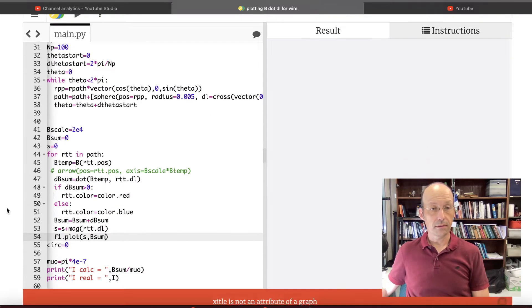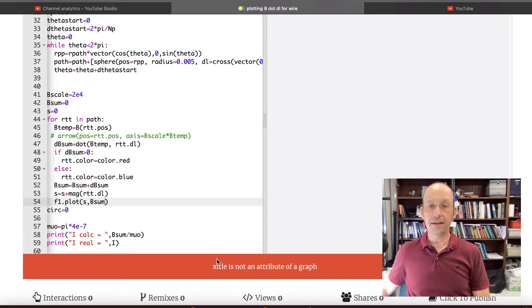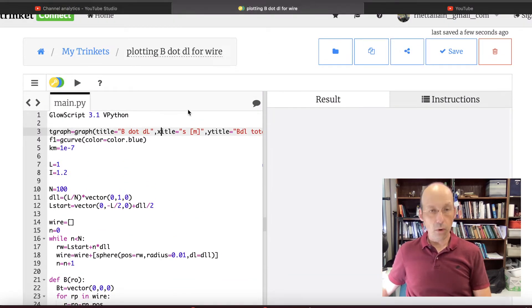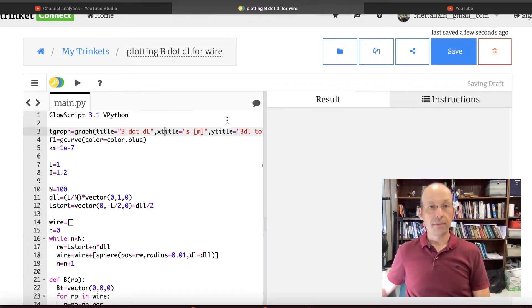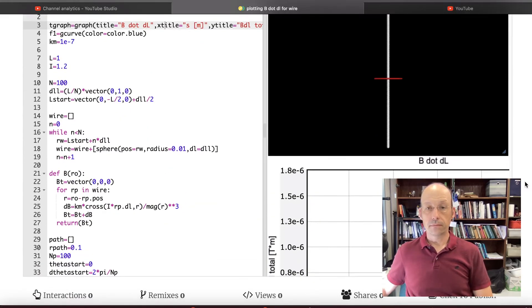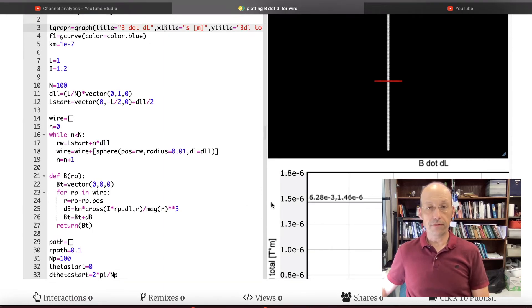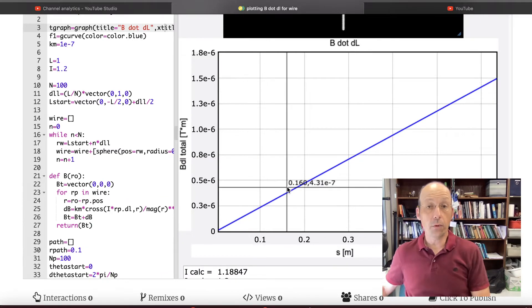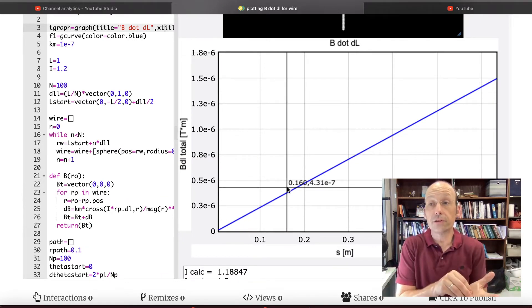If that works, I'm going to be kind of happy. And it didn't work. X title. Way up there. I made a silly mistake. That's fine. I can fix that. Okay, so there's a graph. Okay, so that's fine. That's exactly what we want, right?